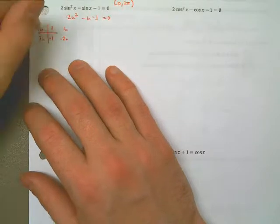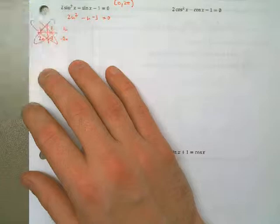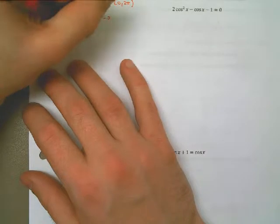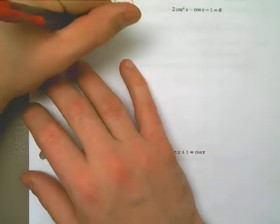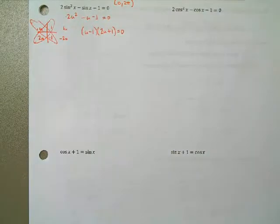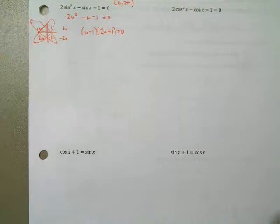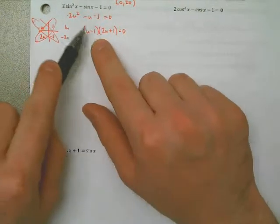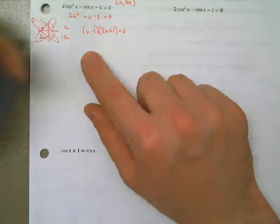And so my factors are u - 1 and 2u + 1. If you have another way, that's fantastic. If you're in my classroom, you've seen this before. But the nice thing is this. If I can factor this equation with the u's, that means I could have done it with sine of x as well. And in fact, it turns out to be (sin x - 1)(2sin x + 1) = 0.